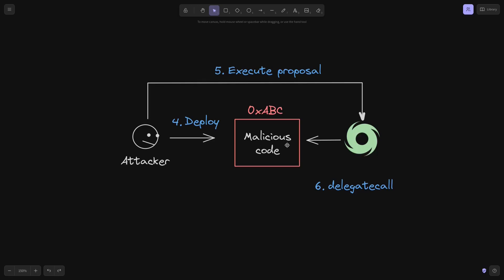Since it's using a delegate call, the malicious code is executed inside the Tornado Cash governance contract. This means that if the malicious code contains instructions to withdraw all ETH or overwrite the owner of the contract, it is possible to do so. Storage variables inside the Tornado Cash governance contract will be updated, and the attacker can steal all tokens locked inside — the contract has been compromised.